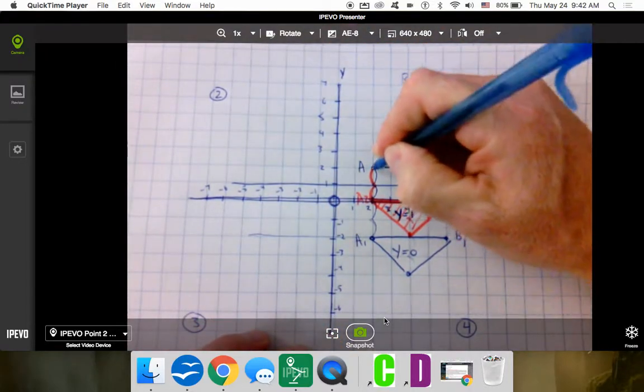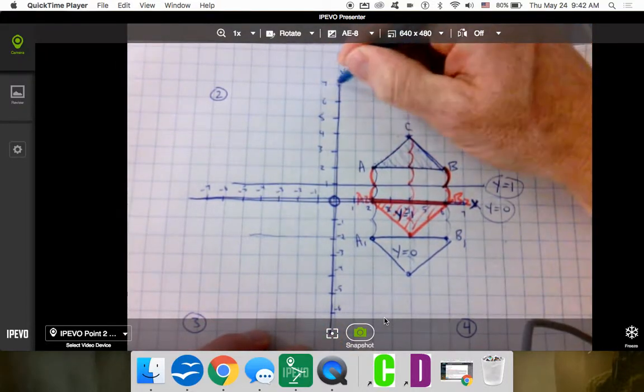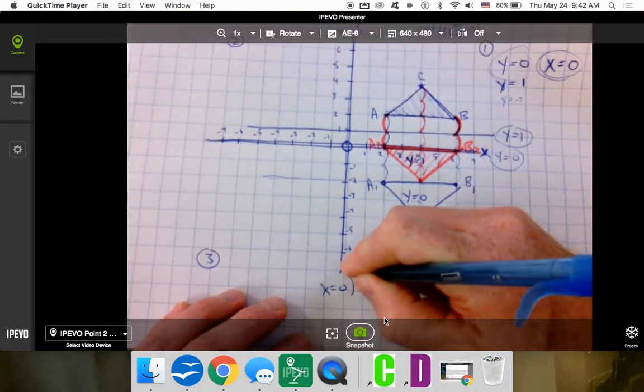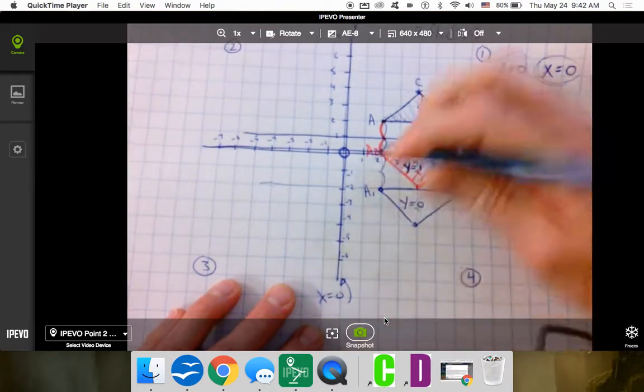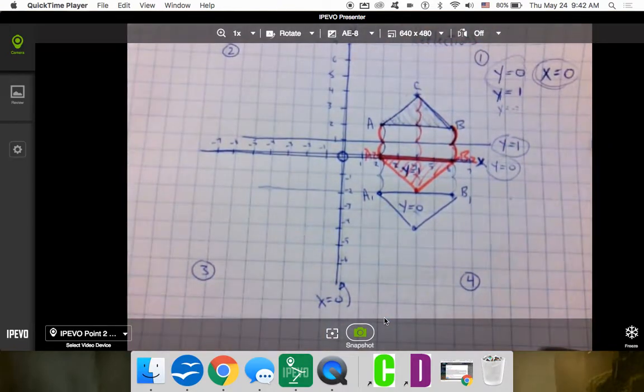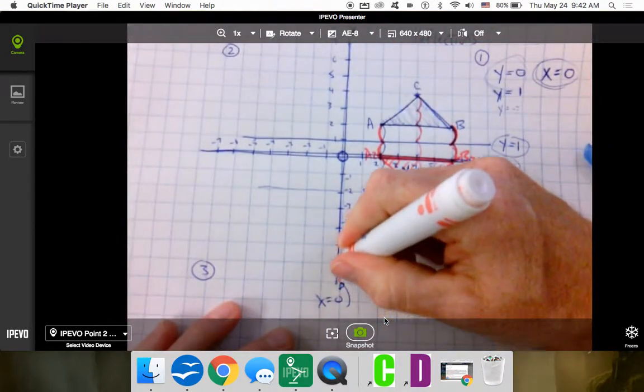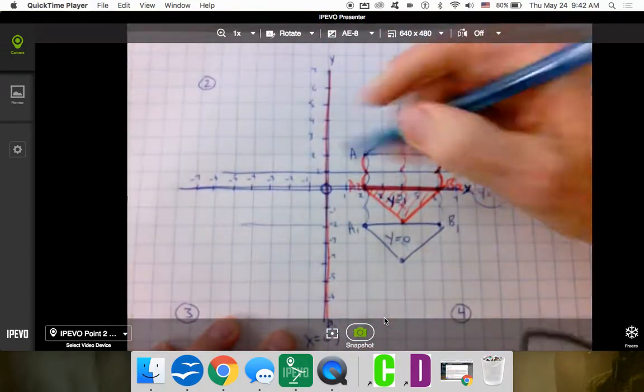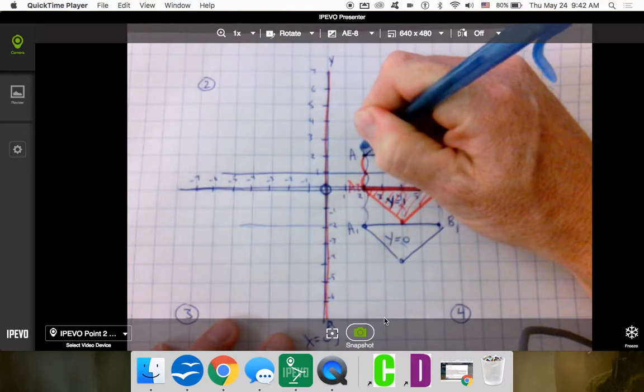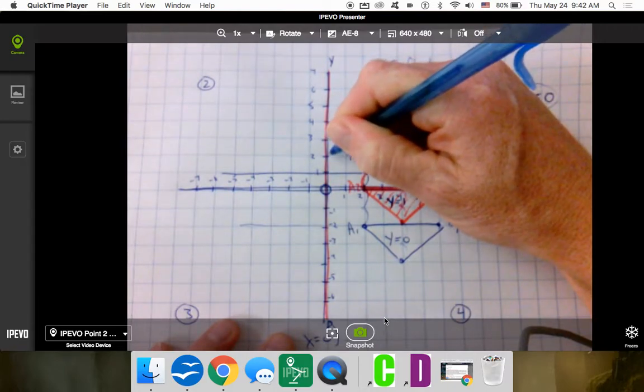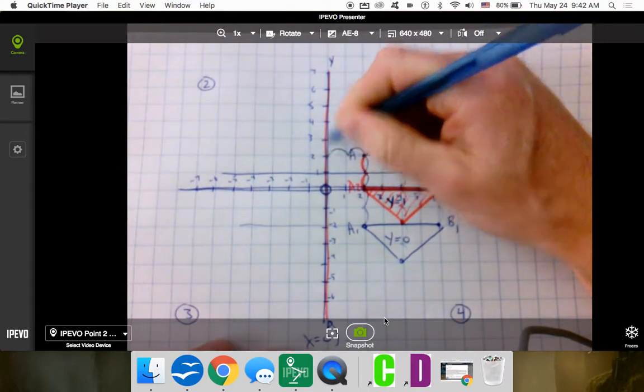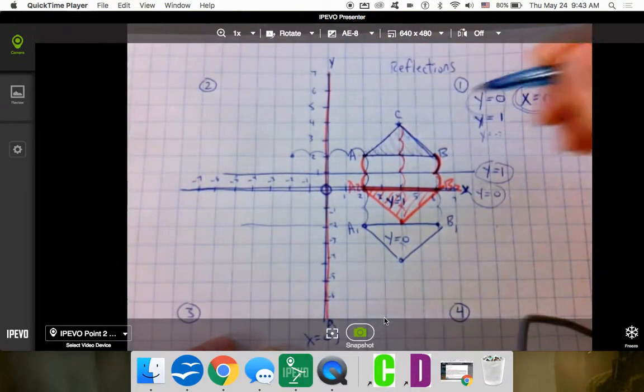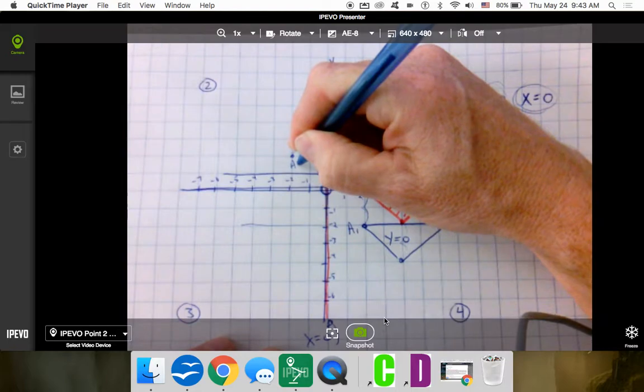So for A, this becomes x equals 0. I can put it down here. x equals 0 is right here. So that means to get to x equals 0, let me make this line here. This is x equals 0. If I wanted to go two units to x equals 0, I have to do two on the other side.